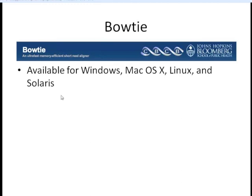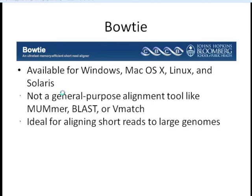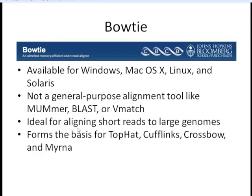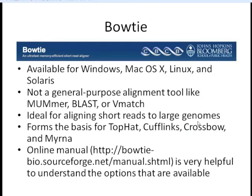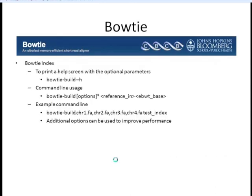Bowtie is available for Windows, Mac, Linux, and Solaris operating systems. This is not something you want to use for just any sequence alignment like BLAST — it's designed specifically for aligning short reads to large genomes. Bowtie also forms the basis for TopHat, Cufflinks, Crossbow, and mRNA-seq, the last two being cloud computing programs we won't talk about today. The online manual and download information for Bowtie are available at the link shown, and it gives a description of all options on the website.